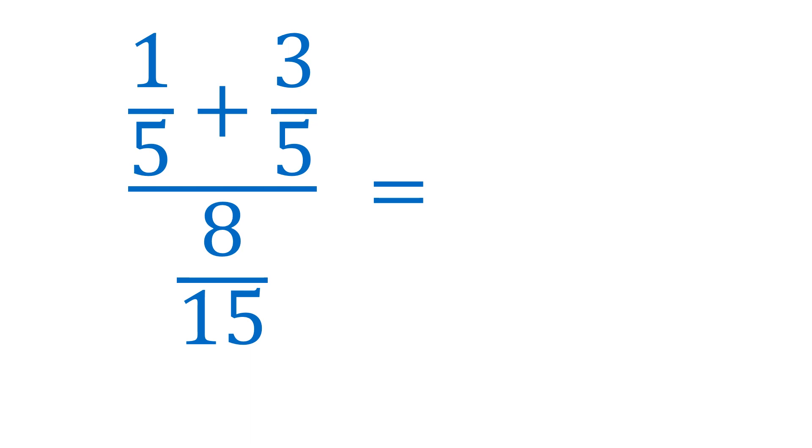Now, how about this? 1 fifth plus 3 fifths over 8 fifteenths. We have an operation on top, so we always do the operations within a fraction first. Let's combine 1 fifth plus 3 fifths. That is 4 fifths. Now it becomes 4 fifths over 8 fifteenths. Then, let us simplify.